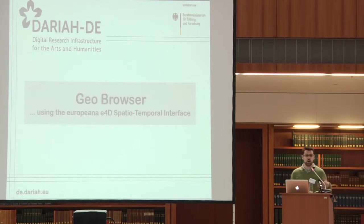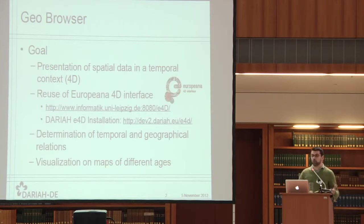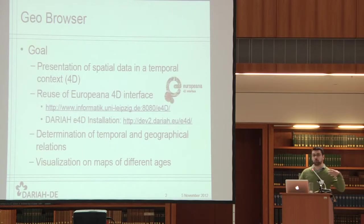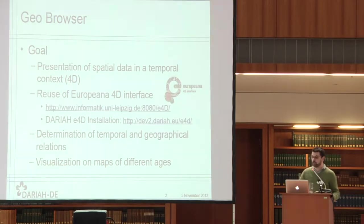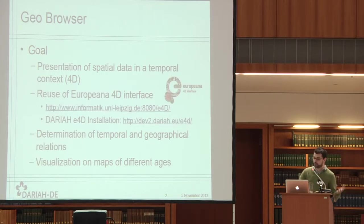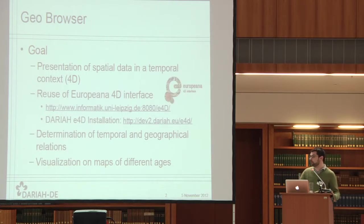The GeoBrowser is one of these tools offered by the DREA infrastructure. The main goal of the GeoBrowser is to present spatial data in a temporal context. That's why it's called E4D, the tool from which the GeoBrowser springs. It's a reuse of the European 4D tool, and it's useful for researchers in order to determine relationships within data on a temporal and geographical level. It's useful to visualize data, but it's also useful to explore them.